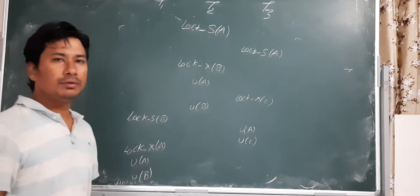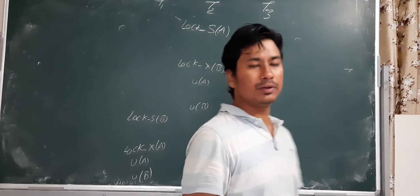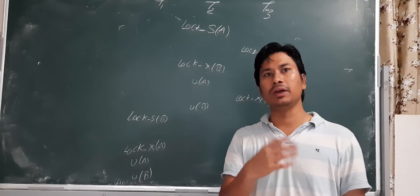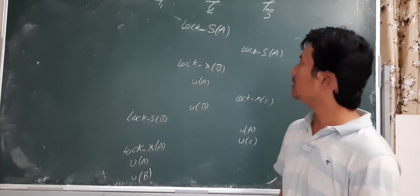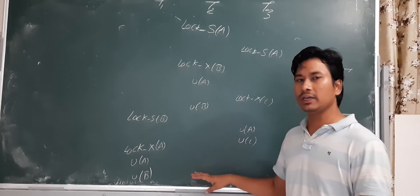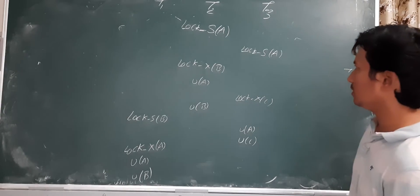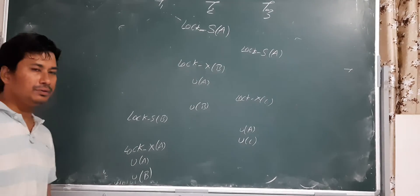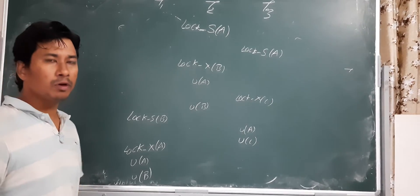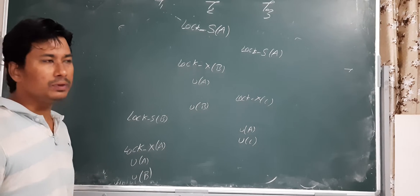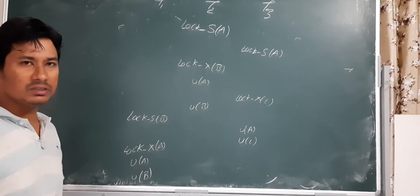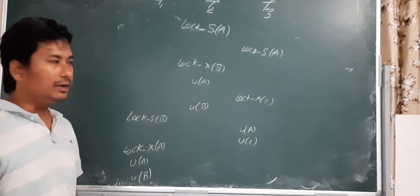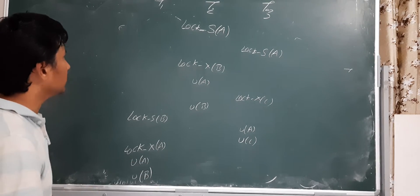Good morning students. Yesterday we discussed basic 2PL, including the growing phase, shrinking phase, and the locking point. Today we will discuss how serializability is achieved using the 2PL protocol, and we will also discuss the deadlock problem and the cascading rollback problem that arise in 2PL. So 2PL solves the serializability problem, but deadlock and cascading rollback remain.